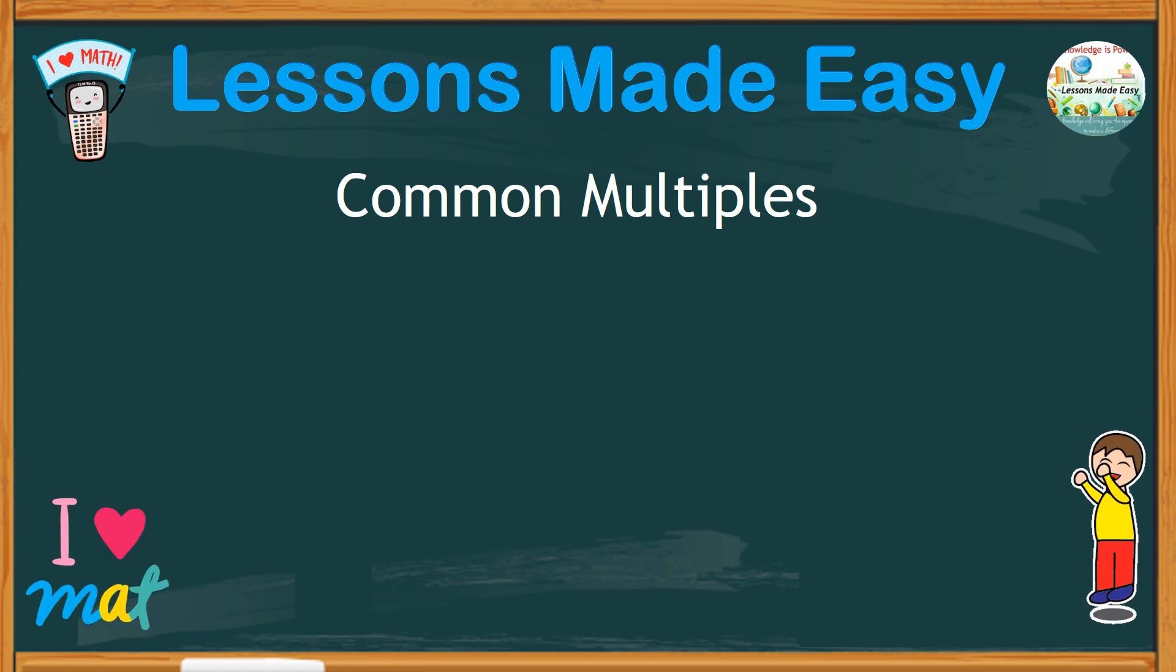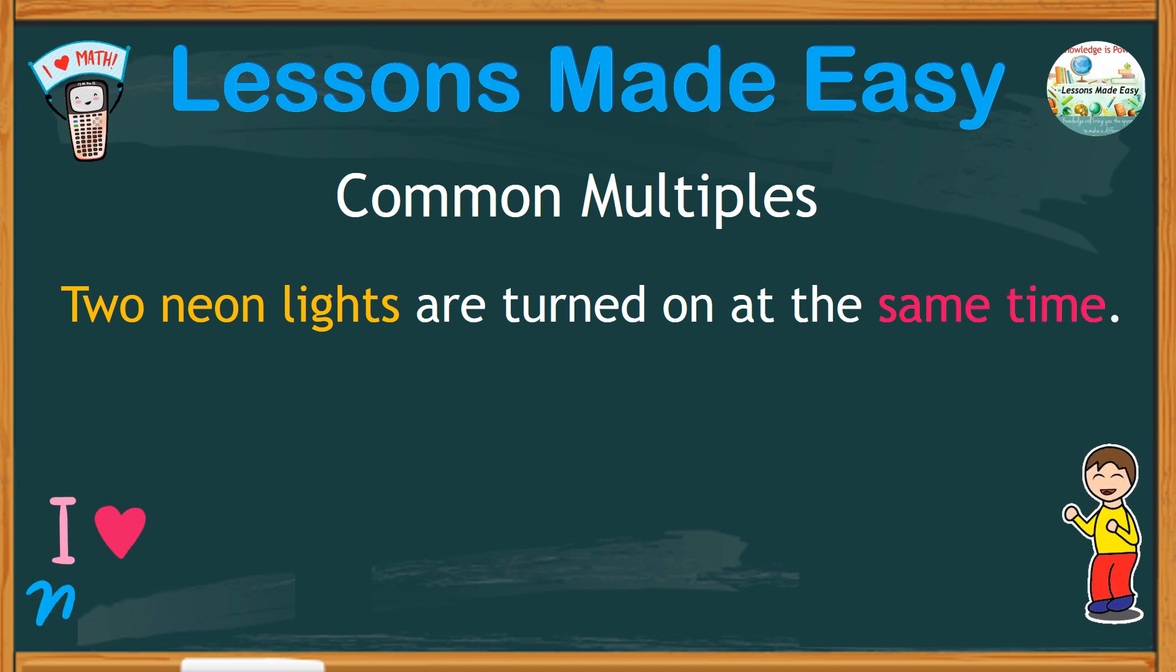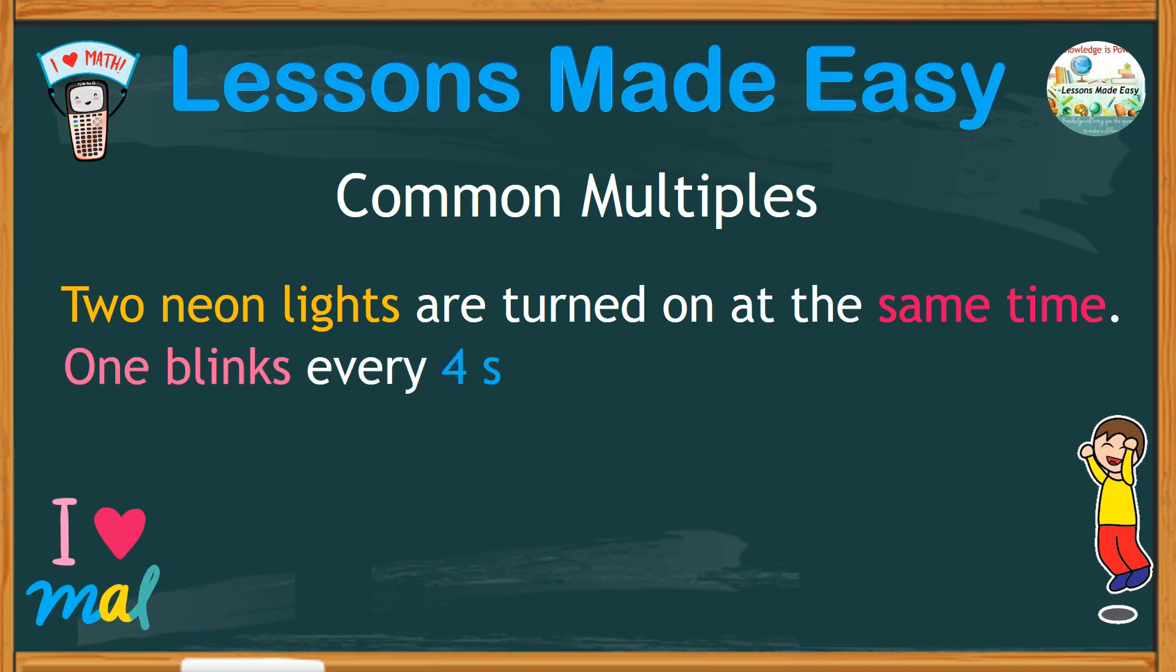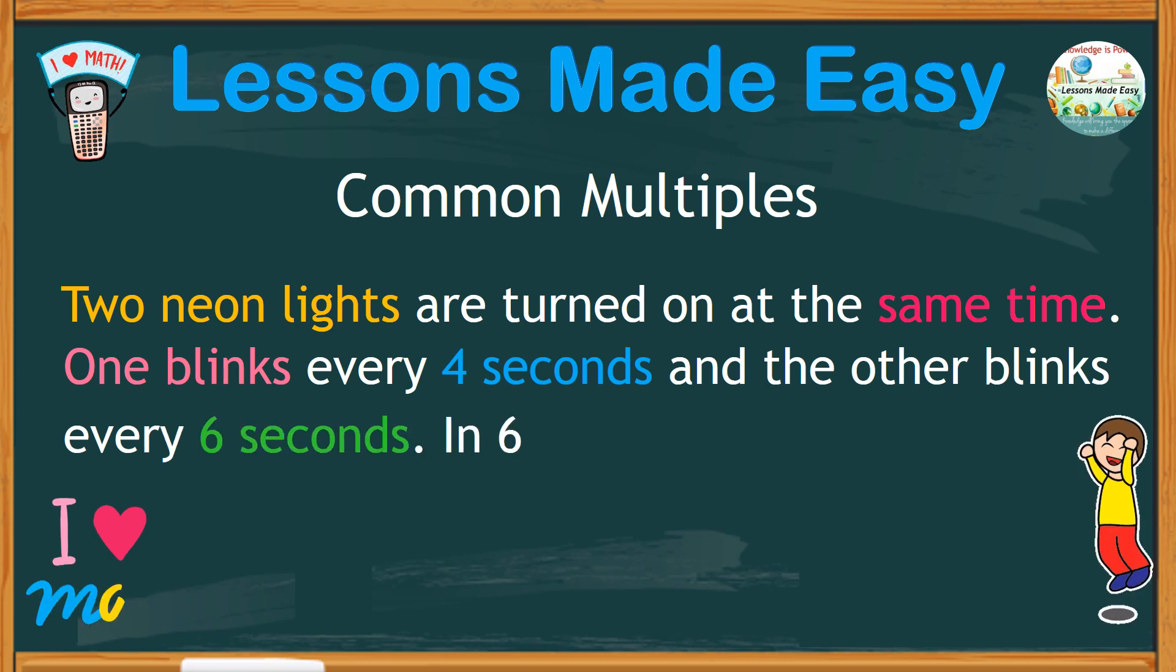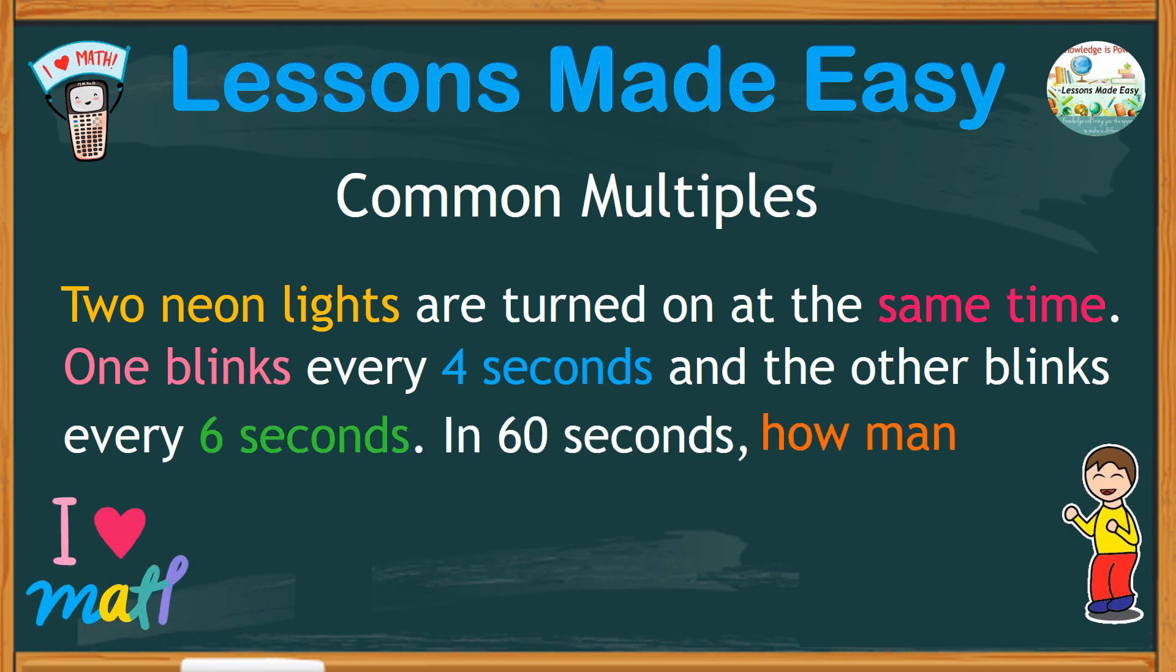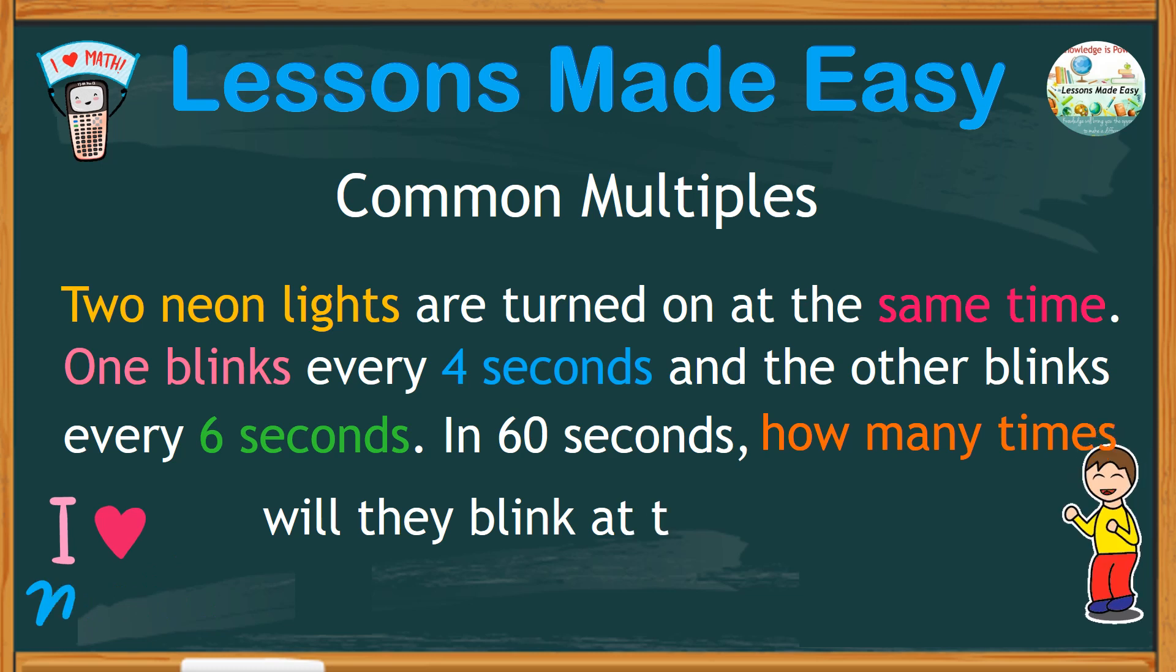And here is the simple problem. Two neon lights are turned on at the same time. One blinks every 4 seconds and the other blinks every 6 seconds. In 60 seconds, how many times will they blink at the same time?